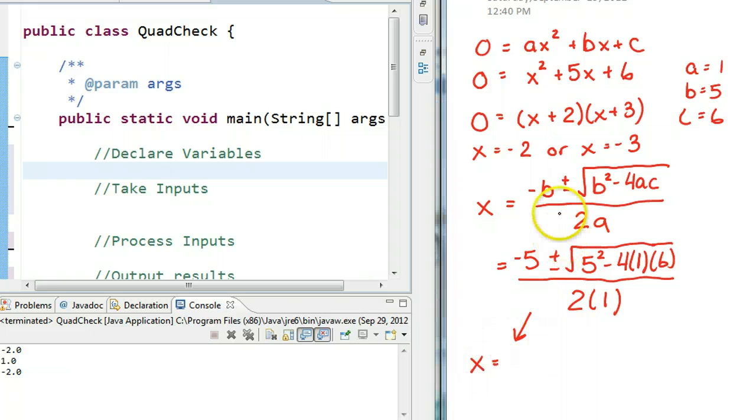Because of this plus or minus here. So, x is going to equal negative 2, or x is going to equal negative 3. And that's a concrete example we do in math class.